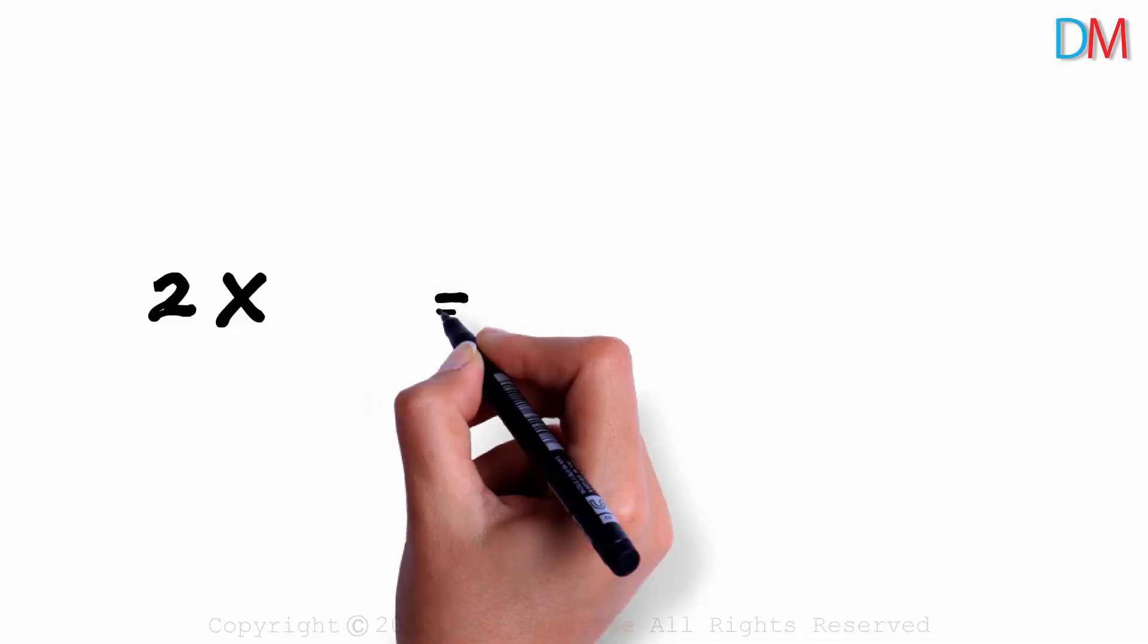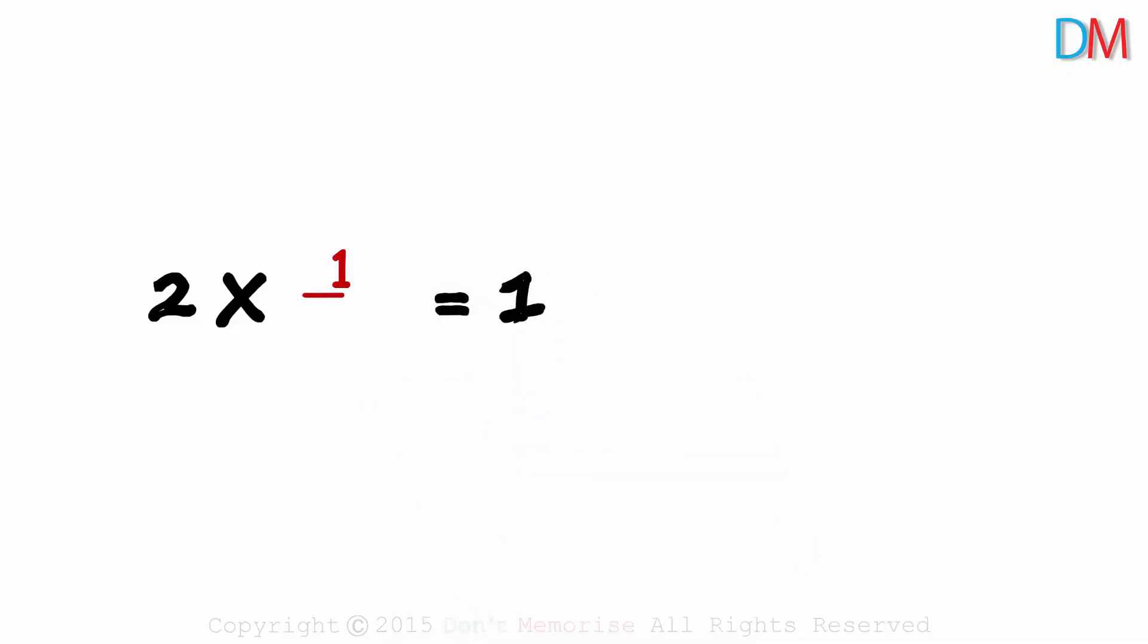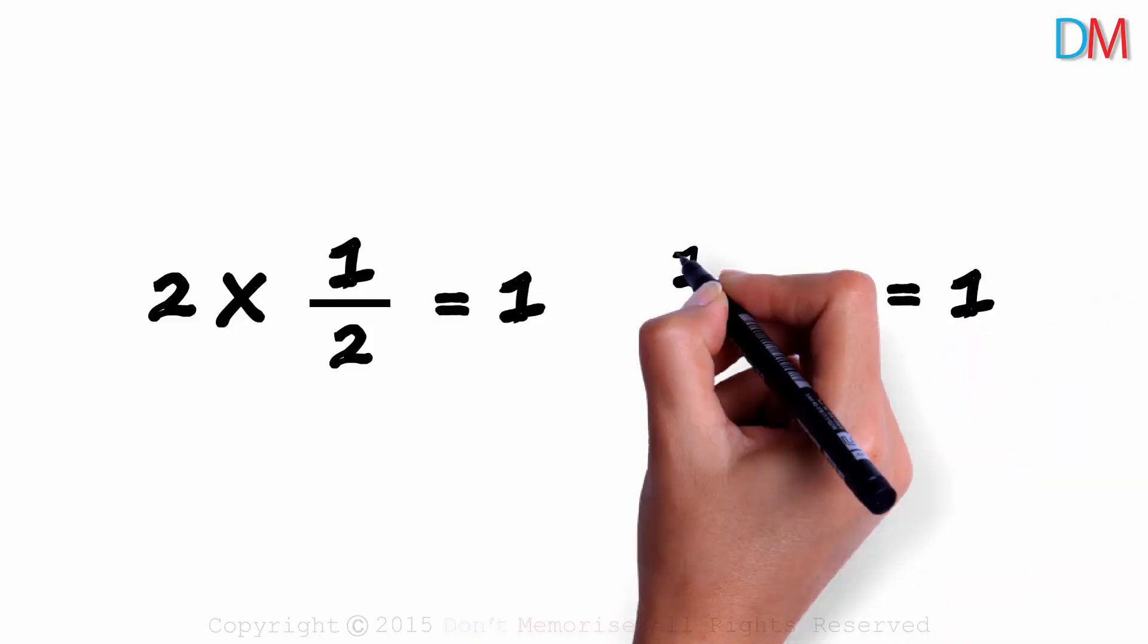2 multiplied by what will give us 1? It will be one half. 2 multiplied by 1 over 2 will give us 1. And what multiplied by 6 will give us 1? 1 over 6.